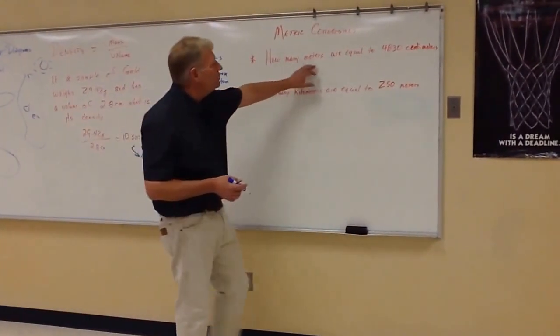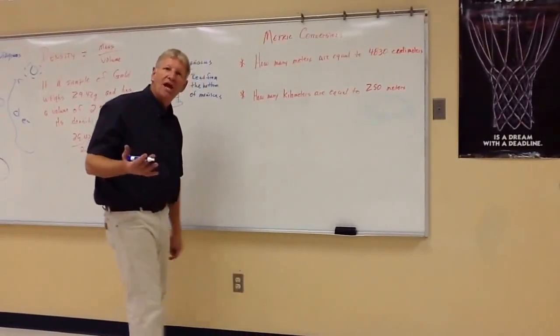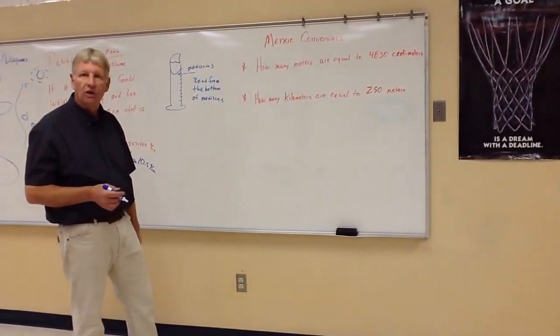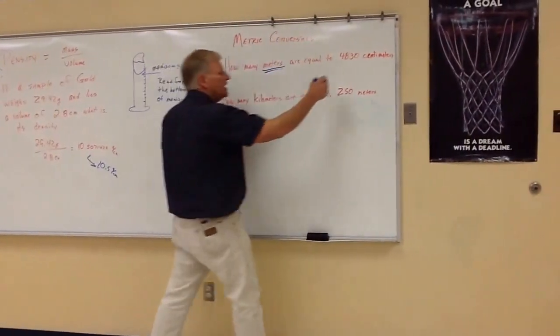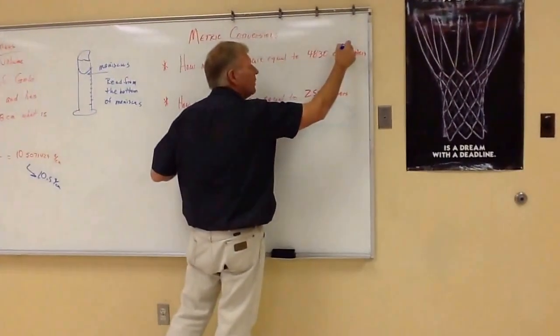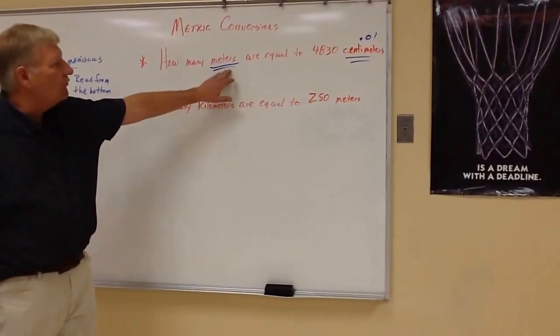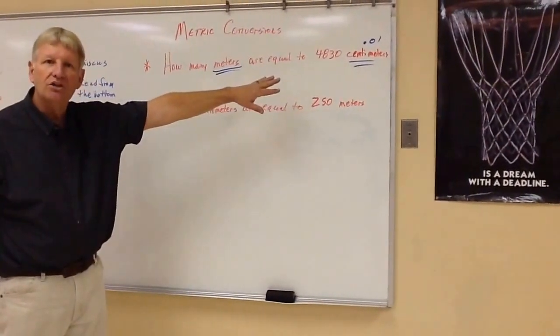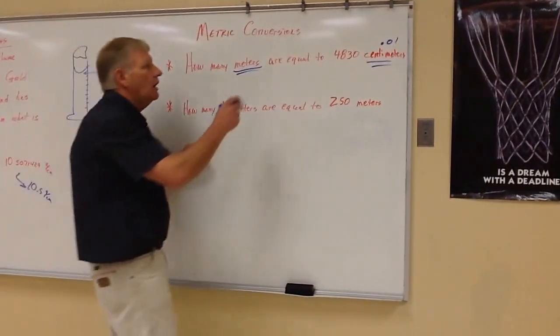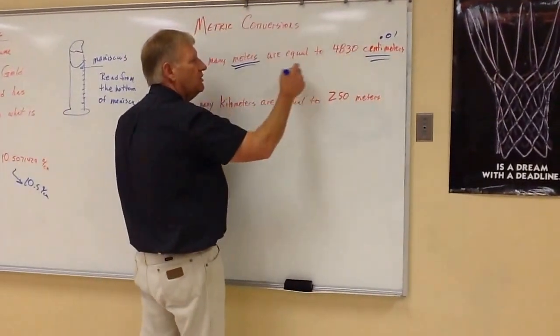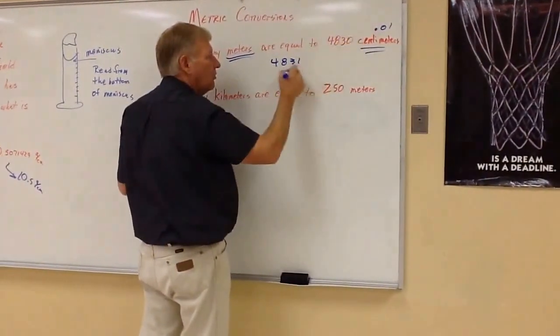So how many meters are equal to 4,830 centimeters? So what we ask ourselves is which one's larger and which one's smaller. So once again, we have a meter. And then a centimeter is 0.01 meters. So since this is larger, we're going from larger to smaller, then we're going to make our answer smaller. So how many meters are equal to 4,830 centimeters? Well, we take our 4,830, and since this is times 0.01, boom.